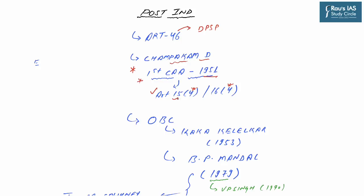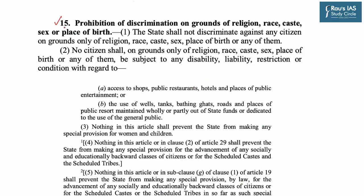Article 15(1) says the state shall not discriminate against any citizen on grounds only of religion, race, caste, sex, place of birth or any of them — the word 'only' is very important, as discrimination can be done on other criteria. Article 15(2) deals with disability, liability, restriction or conditions regarding access to shops, wells, tanks etc. Article 15(3) provides that nothing in this article shall prevent the state from making special provisions for women and children.